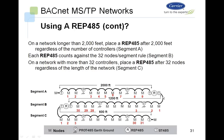Looking at segment B: it starts at node 1 and reaches 30 nodes. Even though the bus length is only 1,200 feet, because we've reached the total number of nodes we need to add a repeater. On a network with more than 32 nodes, place the repeater after the 31st node. Looking at segment C, we have node 1 through node 31, and then the repeater would come after that if necessary.